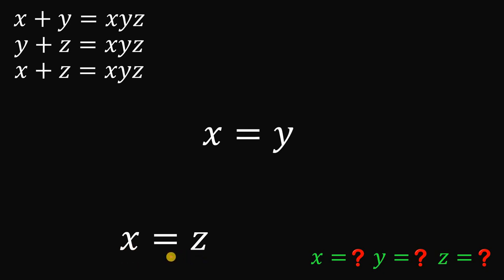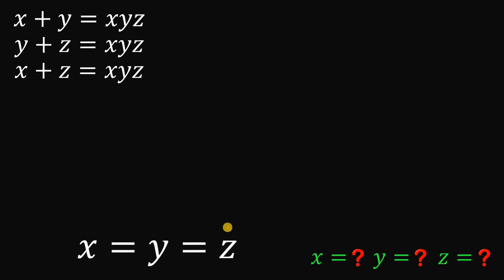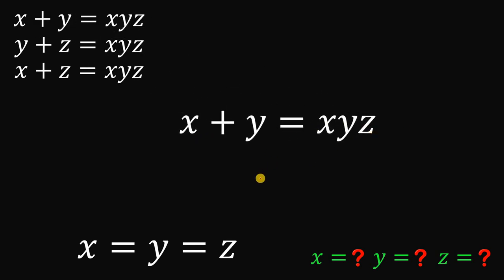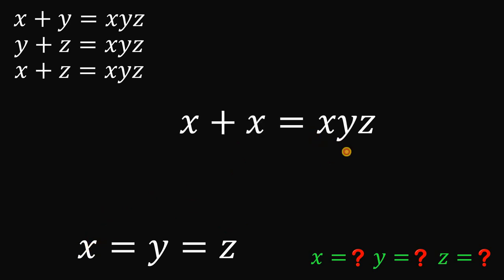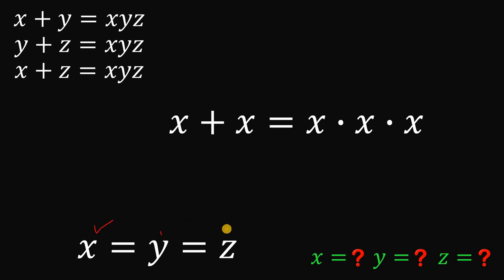Now, since x equals z, and y equals x, we can say that x equals y equals z. That is a big clue for us. Now let's use this clue to answer the question. Taking the first equation, x plus y equals xyz, and knowing x equals y equals z, we can replace y with x. On the right-hand side, x equals y equals z, so xyz becomes x times x times x. Whatever value we get for x is also the value for y and z, because they are all the same.